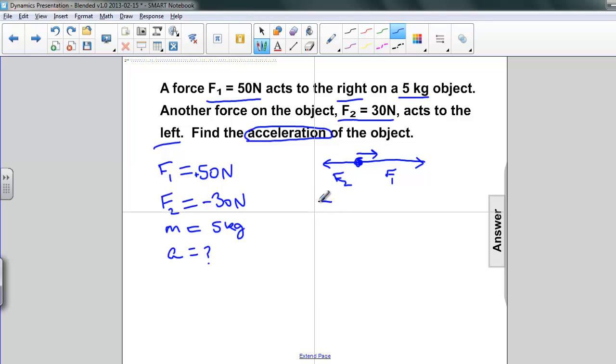So let's work out the net force. The net force is equal to F1 plus F2. That is 50 newtons in the positive direction and 30 newtons in the leftward or negative direction, and the result is 20 newtons. So that's our net force.